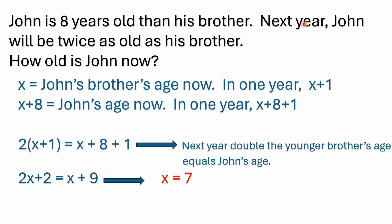Now here's where we get into the future part of it. Sometimes these problems deal in the past, but we're saying one year from now, John will be twice as old as his brother. If in a year John will be twice as old as his brother, that means if we want to set up an equation, all we would need to do is double the younger brother's age in a year, and that would equal John's age, because John will be twice as old as his younger brother in one year.